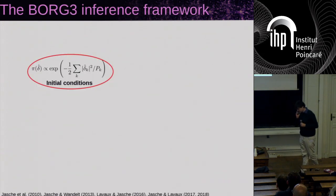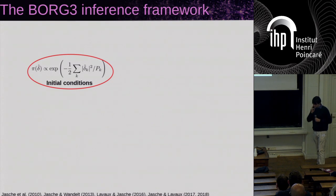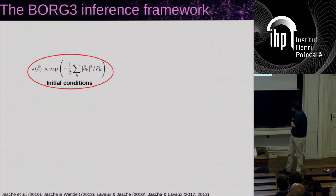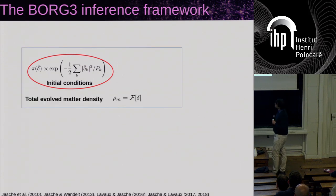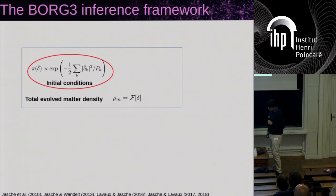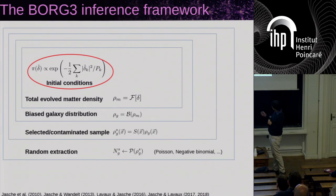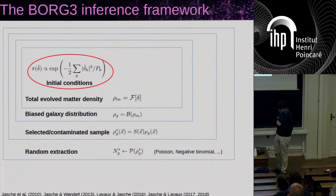To go back to the foundation: the Borg inference framework is based on the idea that we have a good idea of initial conditions — they are fairly Gaussian and we start from this prior, quite useful in case of missing data. From these initial conditions, we push with a forward model that gives us the total matter density field. For a model that would be like an N-body solver, for example. Then we continue pushing different things, and to highlight the problems between the matter field and the galaxy solution, we have an effective bias model.